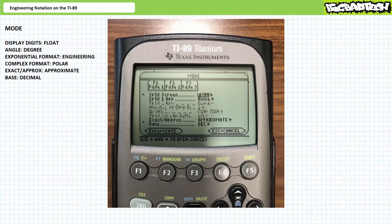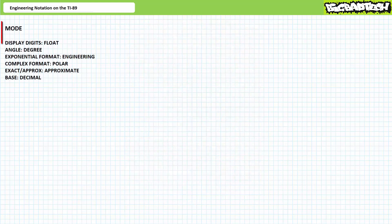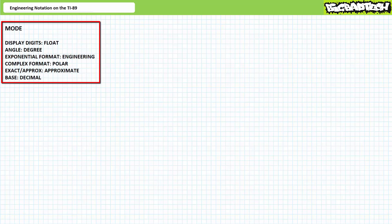All right, that's all we really need to do in mode. Let's get out of here by pressing enter to save our choices. In summary, display digits float. Angle, degree, exponential format engineering. This is the topic we're going to be discussing today. Complex format, polar. On the second page, exact versus approximate must be an approximate, and base must be in decimal. Let's now return to our intended topic, engineering format as displayed on the TI-89.